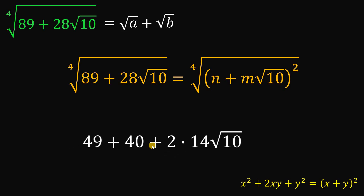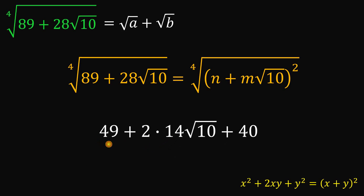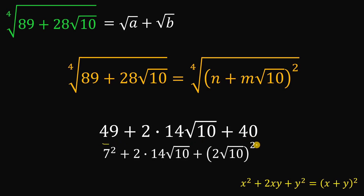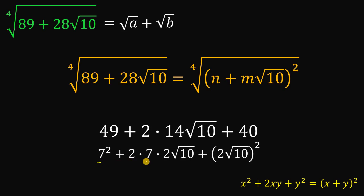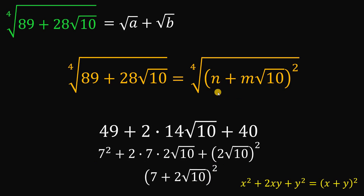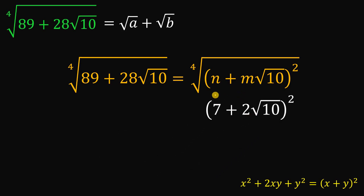Arranging terms: 49 is 7 squared, and 40 equals (2 times square root of 10) squared, since 2 squared is 4 and square root of 10 squared is 10, giving 4 times 10 equals 40. So x equals 7 and y equals 2 times square root of 10. The middle term uses 14 factored as 7 times 2, confirming our values. Therefore we can factor the expression as (7 plus 2 times square root of 10) squared, meaning n equals 7 and m equals 2.